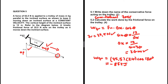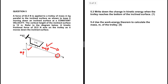You just needed to recall your trig ratios to calculate the displacement of the object along the incline. Let's look at 5.3: write down the change in kinetic energy when the trolley reaches the bottom of the inclined surface. Note the keyword: constant velocity. Since the object moves from A to B at the same velocity, the change in kinetic energy equals zero joules. Since vf = vi, the term ½mvf² − ½mvi² gives zero.